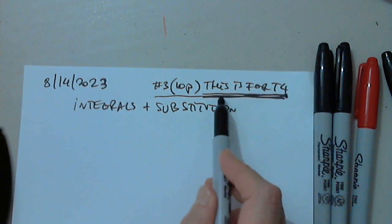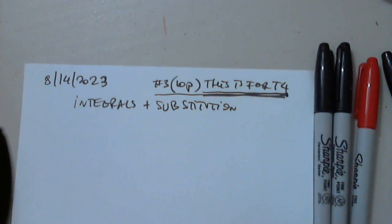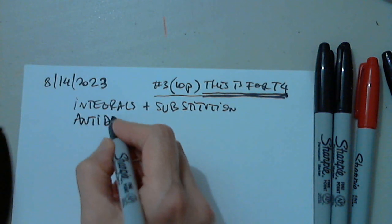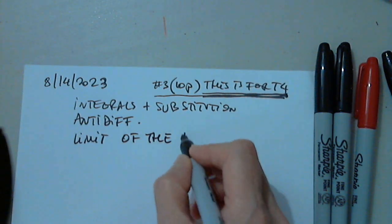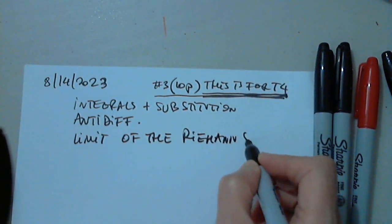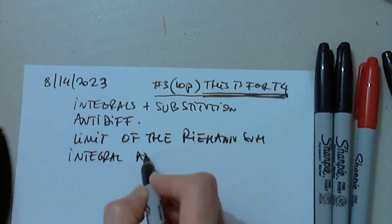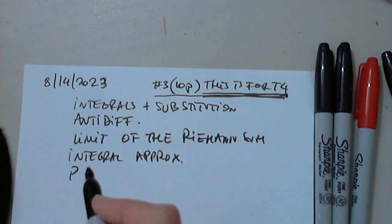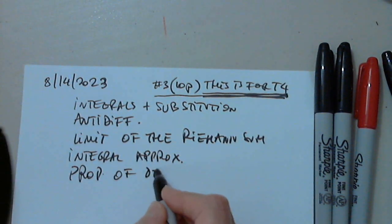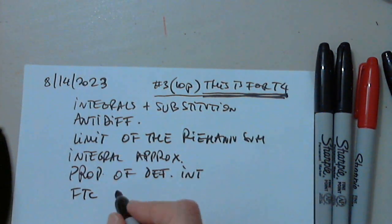In part of Test 4, and it will create the grade for Test 4. So integrals and substitution, anti-differentiation, limit of the Riemann sum, integral approximation, properties of the definite integral, and then I also have fundamental theorem of calculus part one and part two. That's all I had.